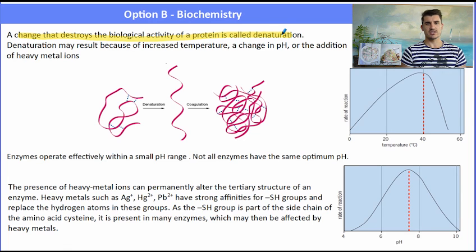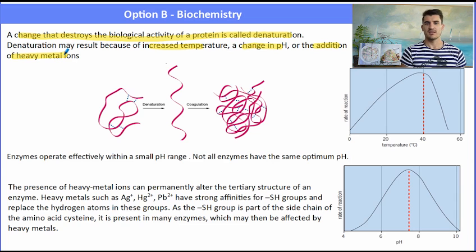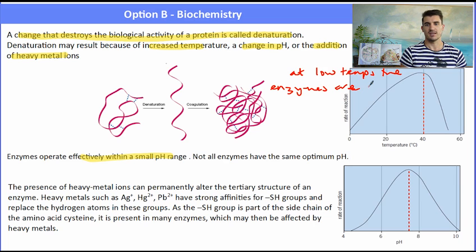So a change that destroys the biological activity of a protein or an enzyme is called denaturing. The things that can denature a protein or an enzyme are increased temperature, a change in pH, or the addition of heavy metals. And what happens is that interaction between those Z groups breaks apart, and it forms like a long strand, and then coagulation is where it quickly alters its final shape. Enzymes generally are efficient only between a small pH range. If we look at the first graph, we can see how the temperature changes, as the temperature changes, how the rate of reaction of an enzyme is changed. And we can see that at 40 degrees, it has its maximum efficiency.